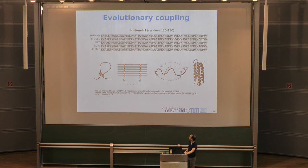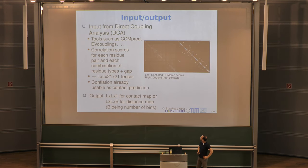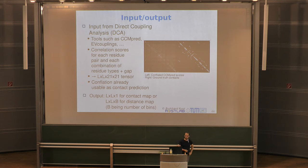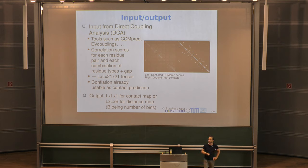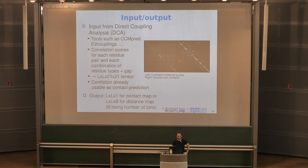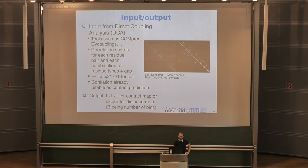Pretty much all methods still use evolutionary information. On a technical level, we compute evolutionary coupling scores using DCA tools — Direct Coupling Analysis. CCMPRED is one such tool; it has the advantage of being GPU-accelerated, which makes sense since we train on GPUs anyway. The output is correlation scores for each residue pair i and j, with 21 × 21 features per position — corresponding to 20 amino acids plus a gap character, giving all possible combinations.